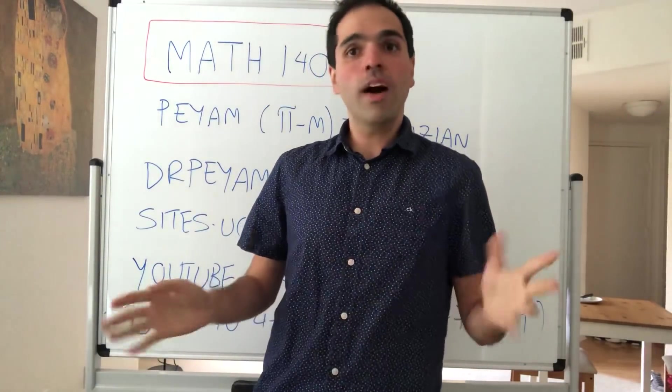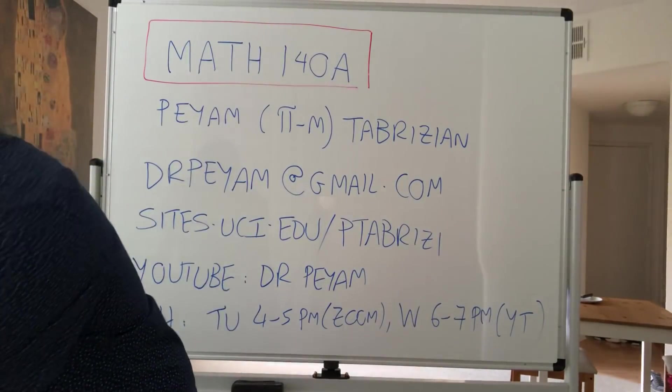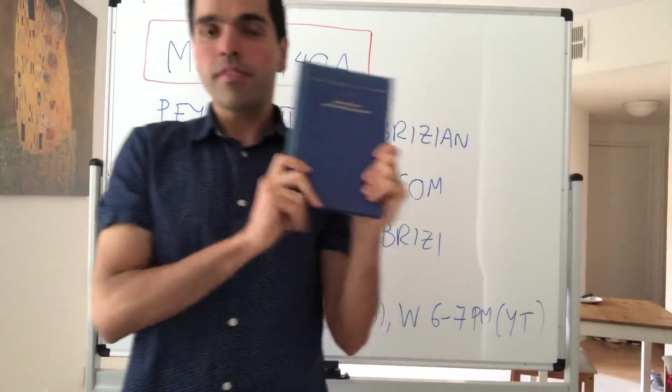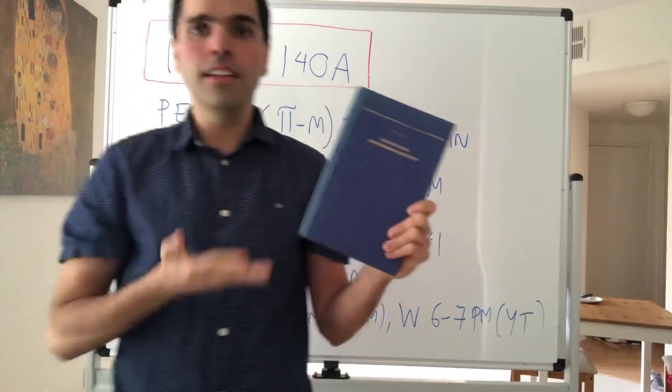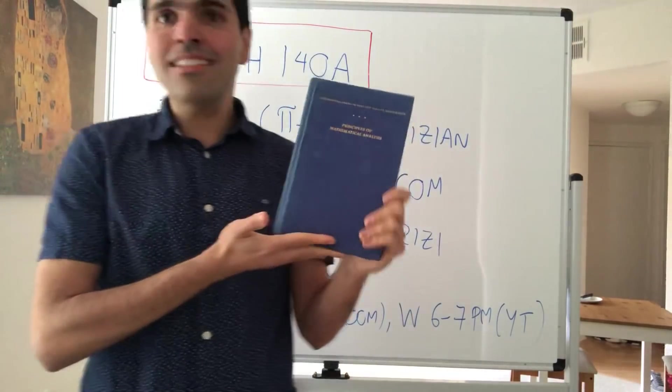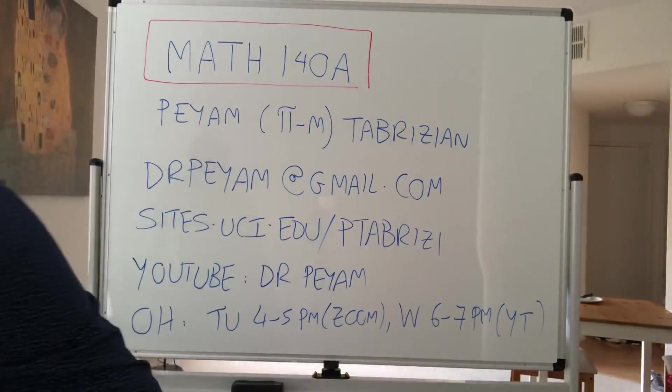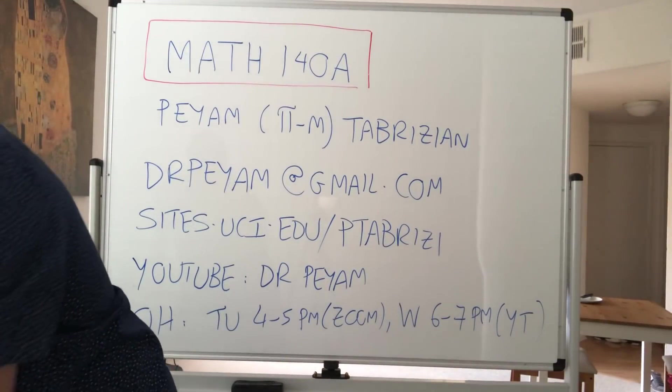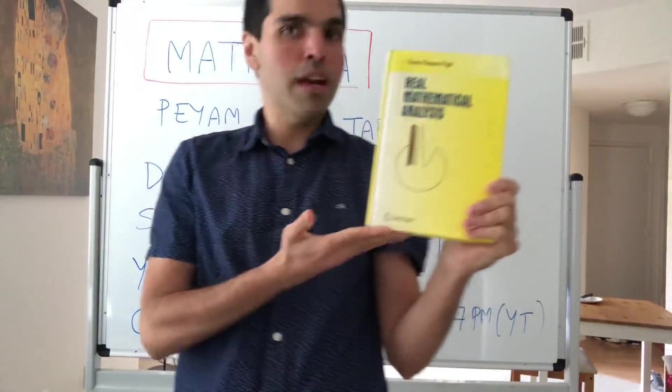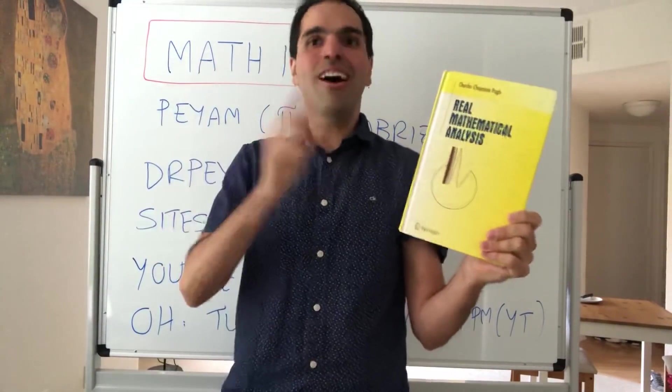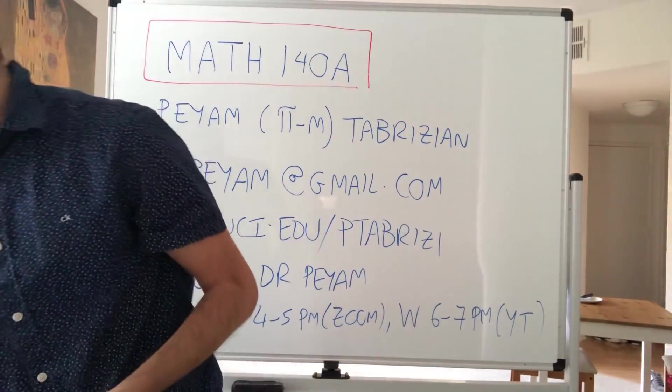And that's why I also highly recommend you to read other textbooks such as this one, Principles of Mathematical Analysis by Rudin, which is very classical but also super dry, so a little bit hard to read. And instead, I do recommend the following one, Real Mathematical Analysis by Pugh, which is a lot of fun to read. Hard but fun. So definitely take a look at that if you can.